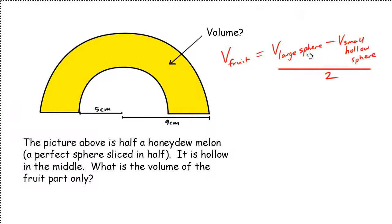Now let's recall the formula for the volume of a sphere. Let me just write it on the side here. Recall that the volume of a sphere, which we memorize, is 4 over 3 pi r cubed.